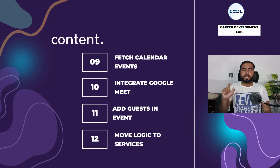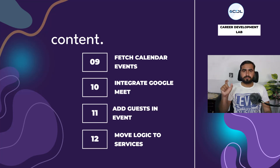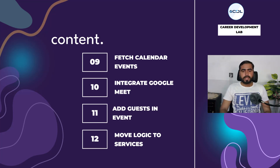The ninth step is to fetch calendar events. We will fetch existing events — for example, if we have three events on a specific date, we can fetch those events from a specific date and specific time.